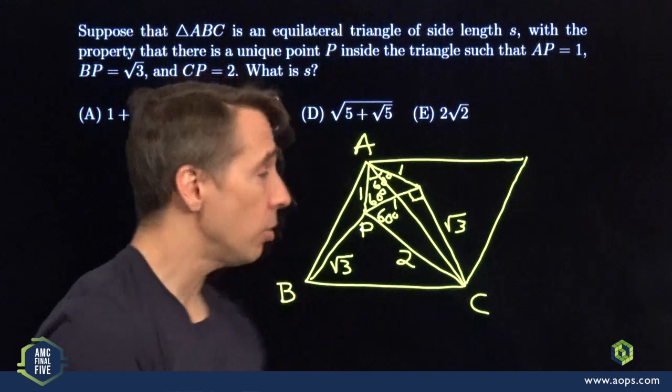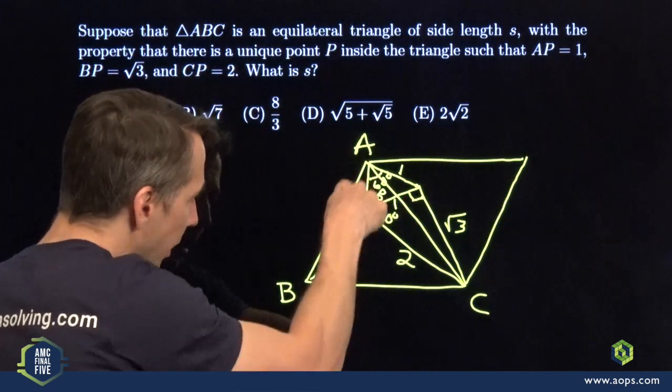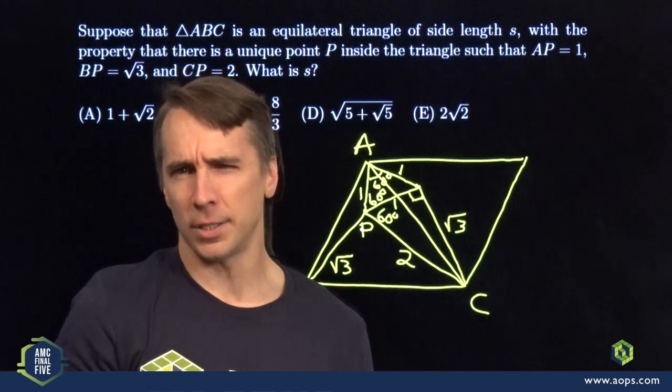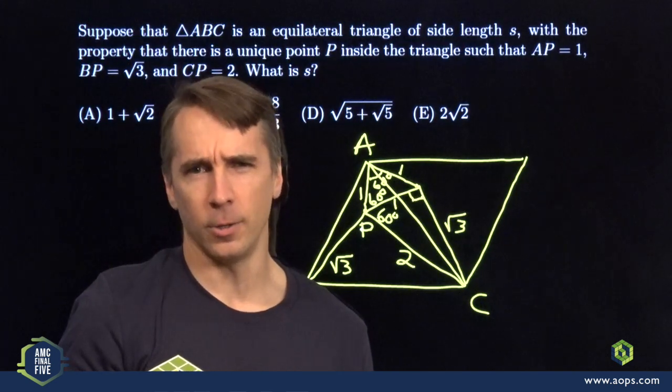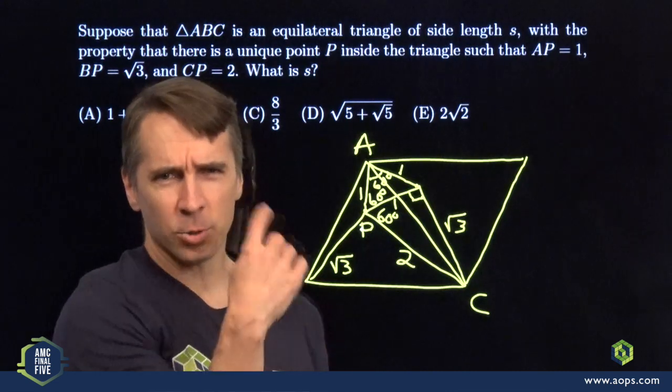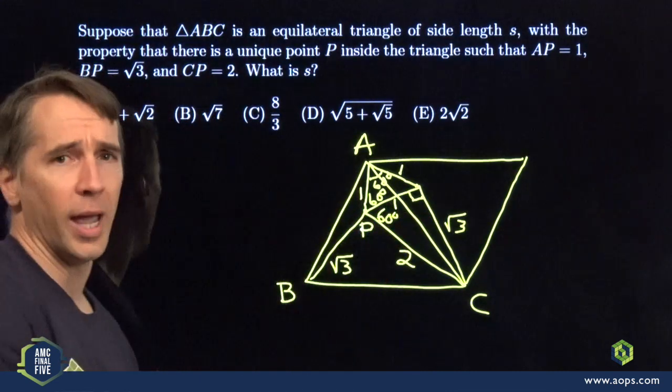And now we can break out the law of cosines. Got a side here, length one, side here length two, angle of 120. But life is still too short for the law of cosines. We could solve the problem from here, but this rotation thing is kind of cool. I'm going to look at what happens if I rotate it the other way.